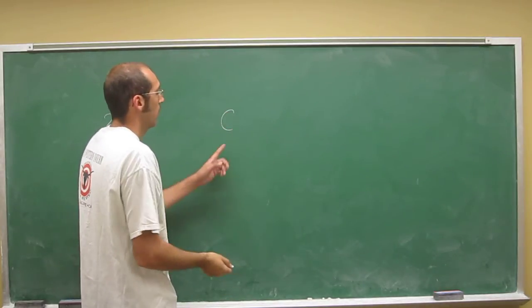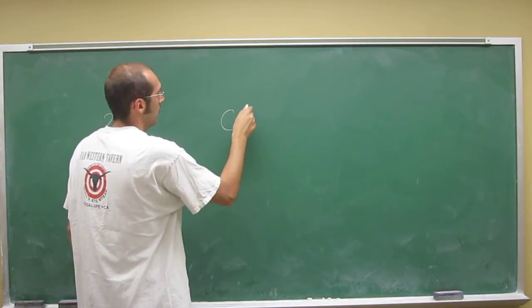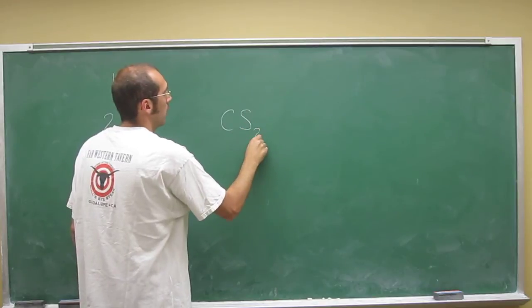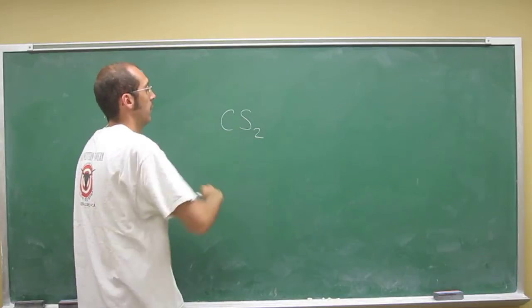So carbon goes first. There's only one of them. So, well, let's do the sulfur first. There's two of them, right? So you put a subscript two there. In fact, this is the molecular formula for carbon disulfide.